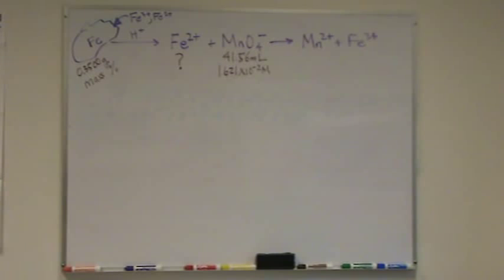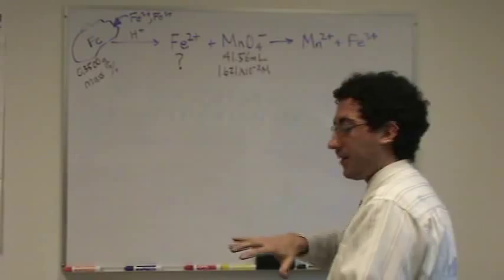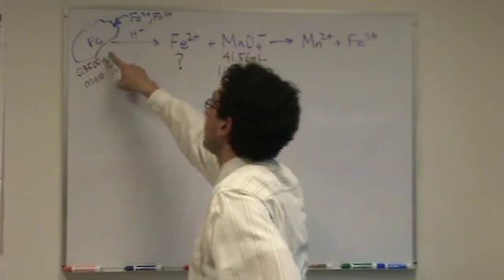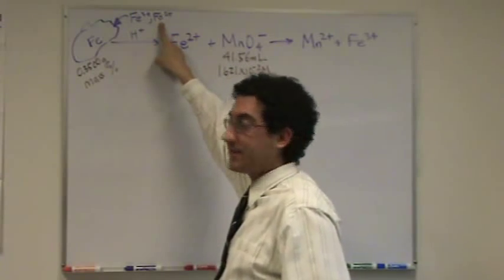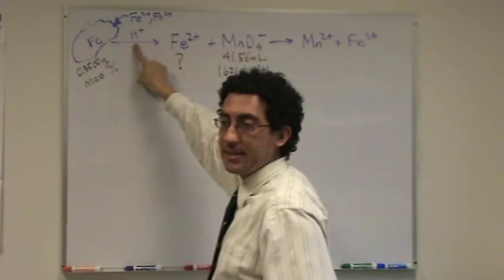This is a fantastic combo problem mixing titration and redox. So here's how what I read works. We have an iron ore. In the iron ore is ferric and ferrous ions. We add acid to that.